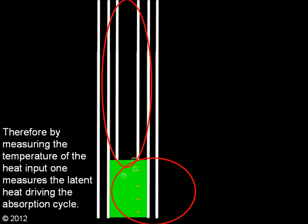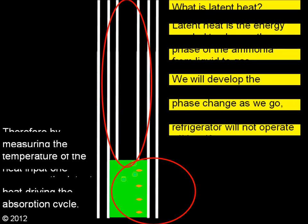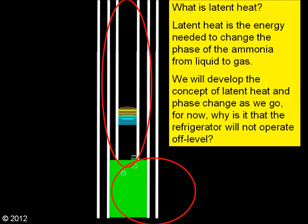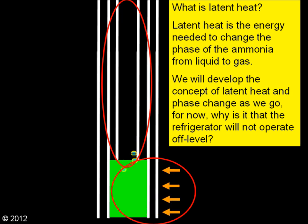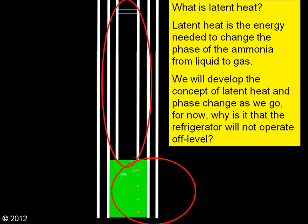By measuring the temperature of the heat input, one measures the latent heat driving the absorption cycle. What is latent heat? Latent heat is the energy needed to change the phase of the ammonia from liquid to gas. We will develop the concept of latent heat and phase change as we go.